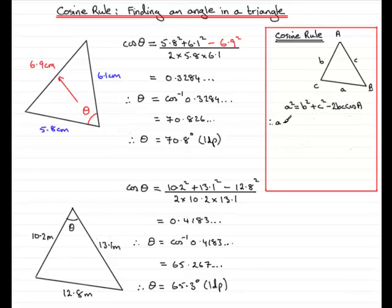What I've done is I've added the 2BC cos A to both sides. If you do that, you're going to get A squared plus 2BC cos A equals B squared plus C squared. I subtract the A squared from both sides and we therefore have 2BC cos A equals B squared plus C squared minus the A squared.